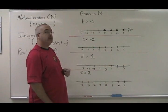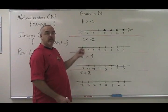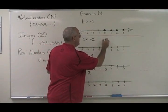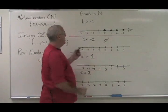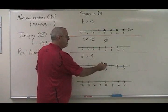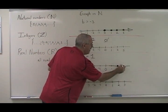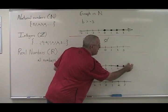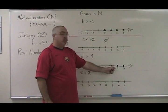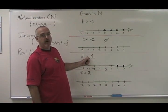C less than negative two: there are no natural numbers that are less than negative two, because there are no negative natural numbers. So I have an empty set answer and a blank number line. D greater than one: the natural numbers greater than one start with two, and go on — three — forever in a positive direction. You have to remember not to include one in your answer, because it is equal to one, not greater than one.